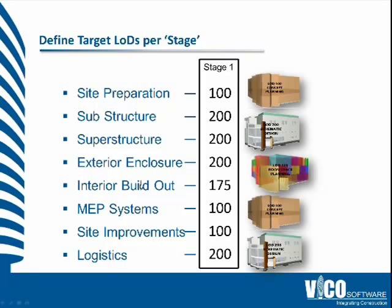It might be that the next item to progress is the superstructure to level of detail 300, and maybe nothing else will progress in that stage release. At that second stage, the estimator and the scheduler will know they have more detail in the LOD 300 superstructure model, and that is where their estimate and schedule will be refined and improved. If they had defined that in the model progression specification, their datasets would already be ready and willing to accept that new model — and they wouldn't have to do anything but activate it, creating a new estimate and a new schedule.